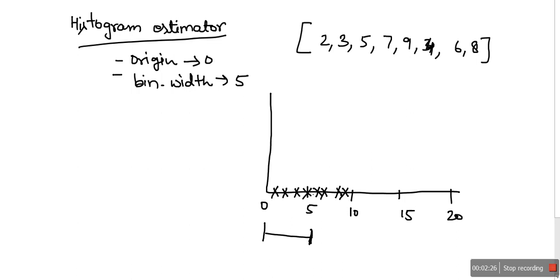From 0 to 5, how many data points are there? There is one point on this 5. We will consider these boundary points in the next bin. If there is a point on 0, that point will be considered in this bin. If there is a point on this boundary, this point will be considered in next bin. So from 0 to 5 there are 3 points: this one, this one, and this one. We will plot a bar here and the height of this bar is actually the number of points in this bin.